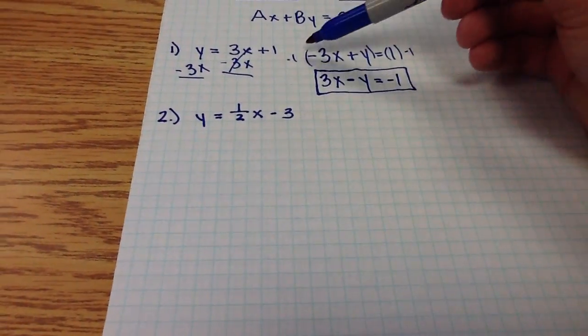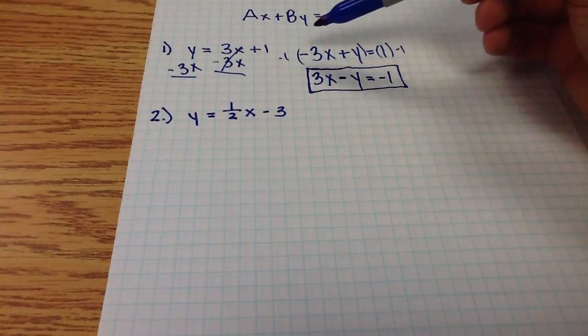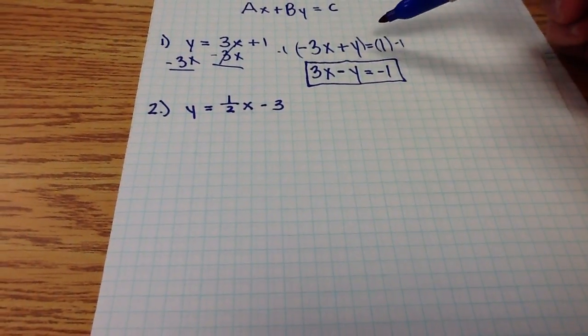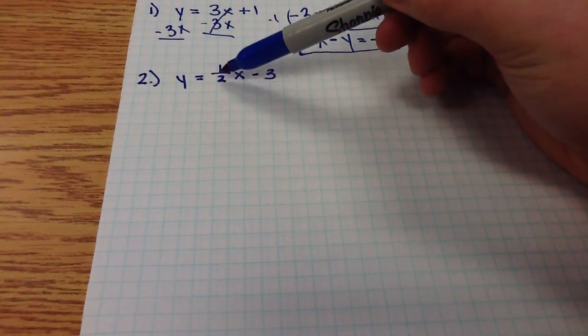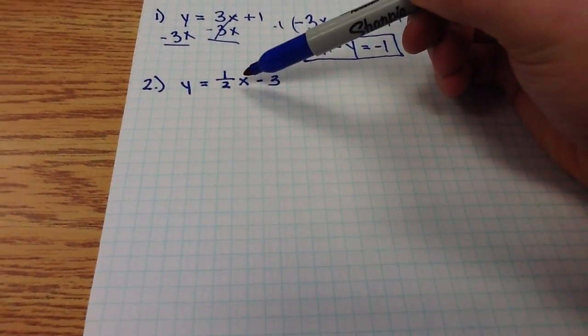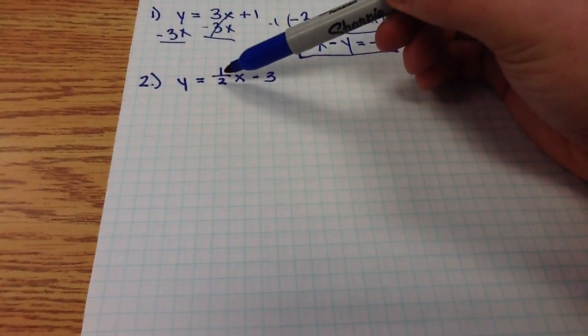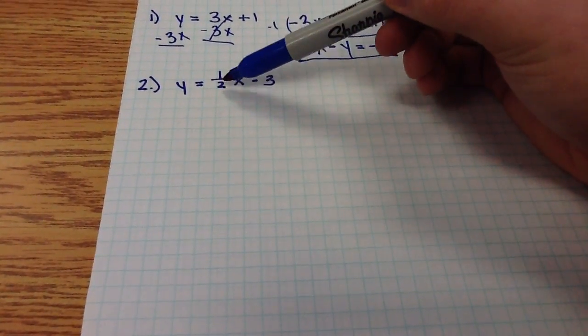I can do whatever I want as long as I do it to both sides. Coming down here, to eliminate the one-half as a fraction, as the coefficient, what I need to do is always multiply by the denominator.